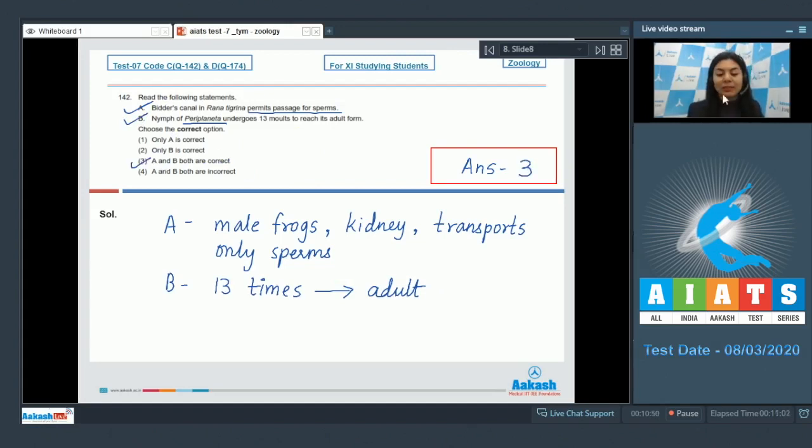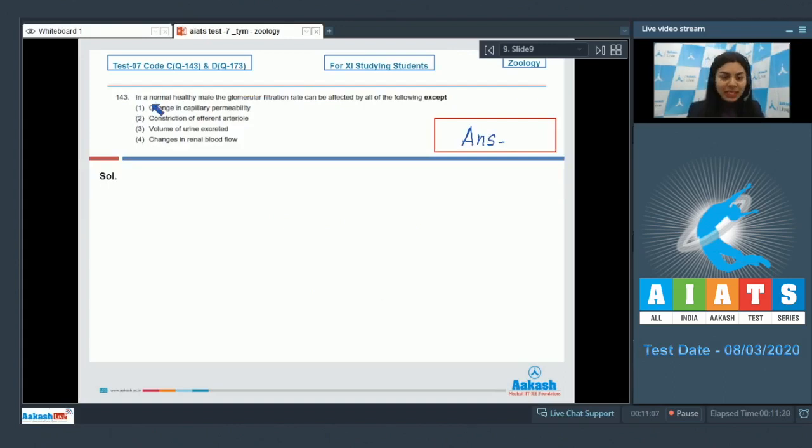Question 143: In a normal healthy male, the glomerular filtration rate can be affected by all of the following except: change in capillary permeability, constriction of efferent arteriole, volume of urine excreted, and changes in renal blood flow. You're looking for a factor which would not affect the glomerular filtration rate.